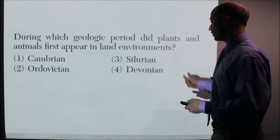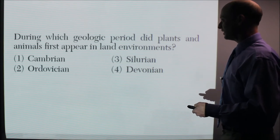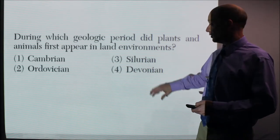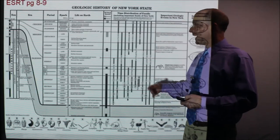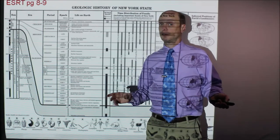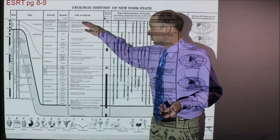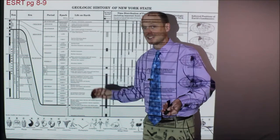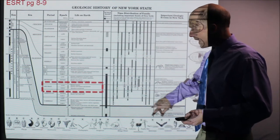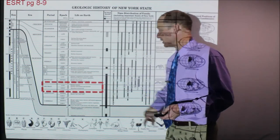Here's another question: During which geologic period did plants and animals first appear in land environments? For this one, you have to go to Life on Earth—it's this column. You really just need to look around. There's no other way than to search through all this little text to find this particular phrase.